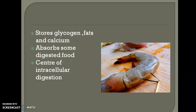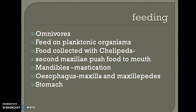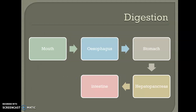It serves as a centre of intracellular digestion of some solid protein. Prawns are omnivores that can feed on both phytoplanktons and zooplanktons. Food is collected with the help of pereiopods. The second maxilla helps push the food into the mouth. Inside the mouth, food is cut into pieces by mandibles, which is called mastication. When pushed into the esophagus with the help of maxilla and maxillipedes, it passes to the stomach by peristaltic movement. From the mouth it goes to the esophagus, then to the stomach.